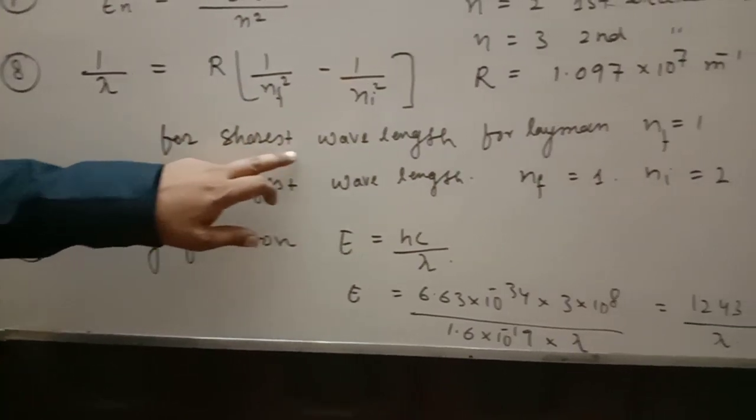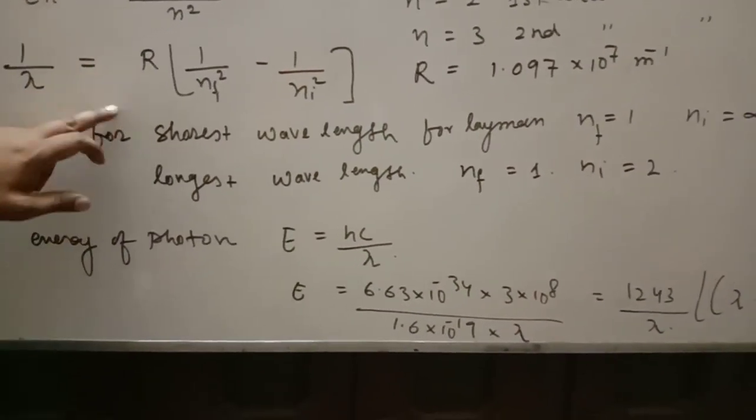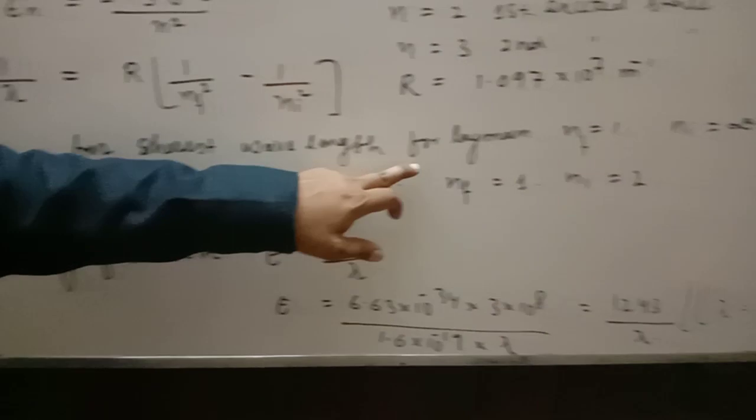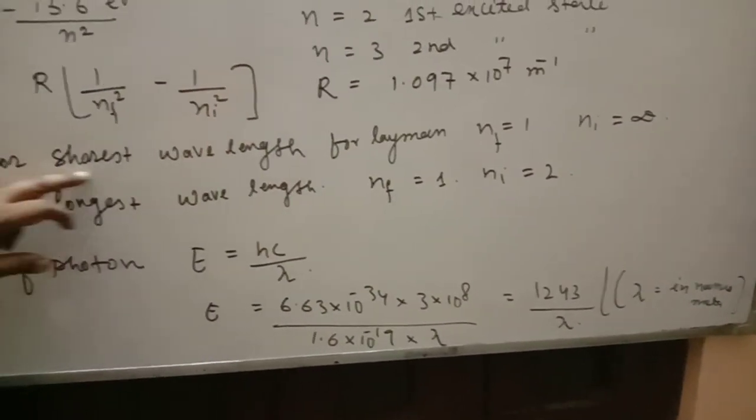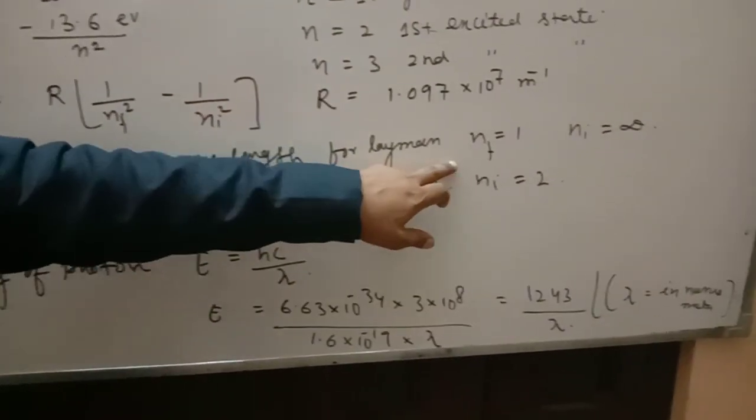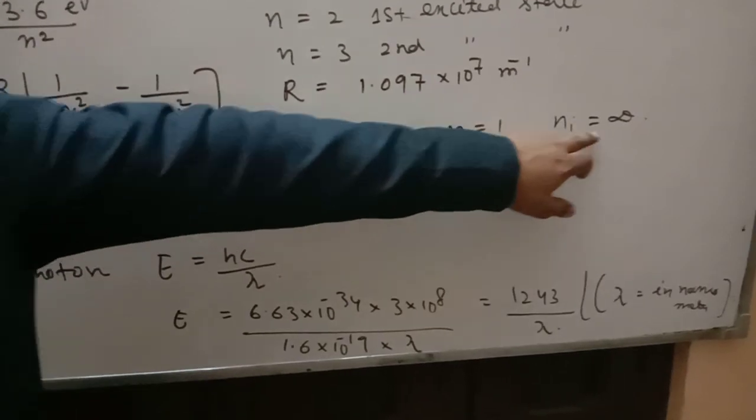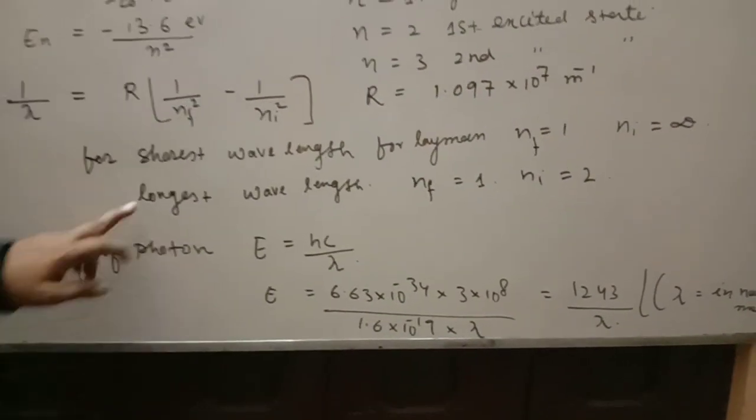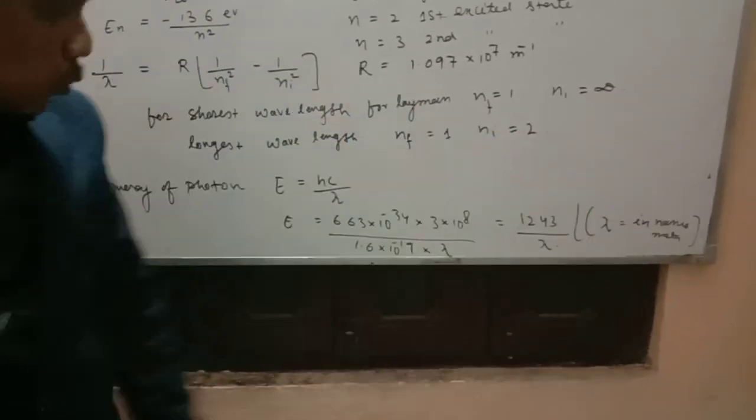And for shortest wavelength, when you solve numerical problems, there are numericals for shortest and longest wavelength. Shortest wavelength: for Lyman series, nf equal to 1, ni is equal to infinity. And longest wavelength: nf is equal to 1, ni is equal to 2.